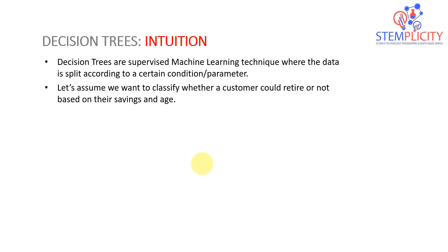Hello everyone and welcome to this new section. In this section we're going to discuss two very famous techniques mainly used for classification, called decision trees and random forest classification algorithms. First let's go ahead and have a quick overview of the definition, and then we'll dig right away into a practical example.